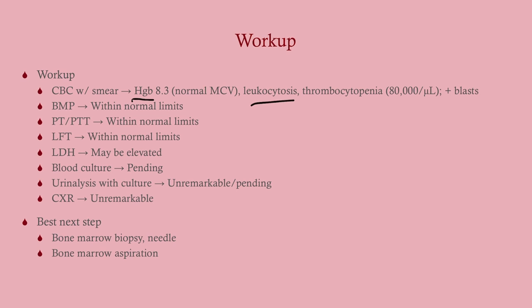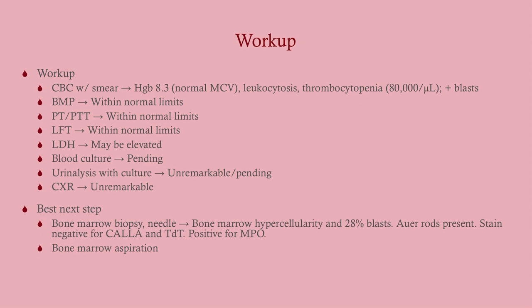Results show anemia, leukocytosis, thrombocytopenia, and positive blasts — immediately think AML in this age group. The best next step is bone marrow biopsy. Even if the CBC wasn't fully diagnostic and you still suspected leukemia, go ahead and get the biopsy. Biopsy shows hypercellularity and 28% blasts, satisfying acute leukemia criteria.